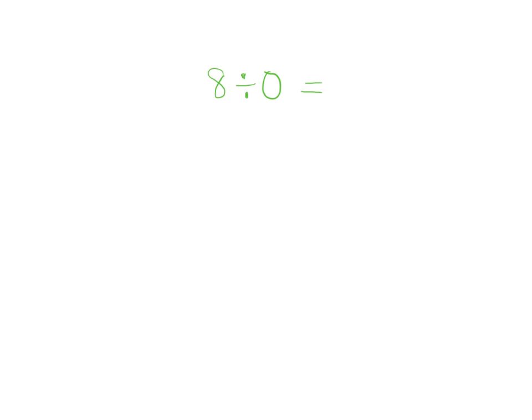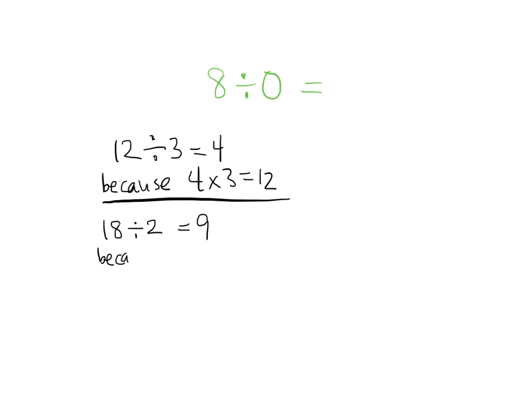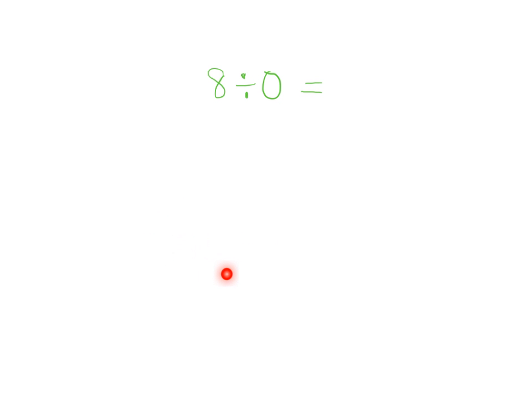So we have to explain why you're never allowed to divide by 0. And we're going to do that through some examples. So 12 divided by 3 equals 4. How do we know? Because we know 4 times 3 equals 12. Now what if I did 18 divided by 2? 18 divided by 2 equals 9. Why? Because 9 times 2 equals 18. So the idea is whatever you think the division problem is, you can always check it by multiplying.